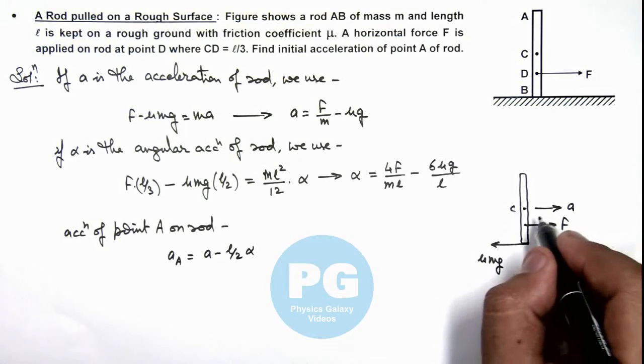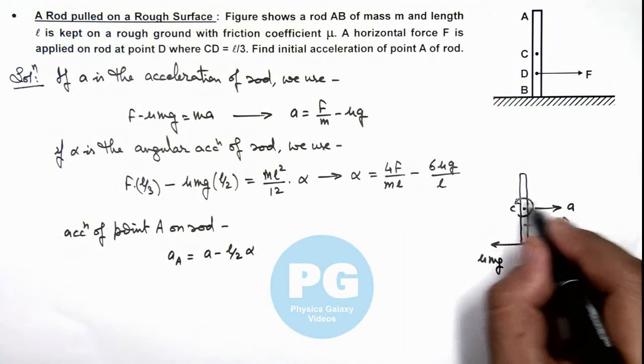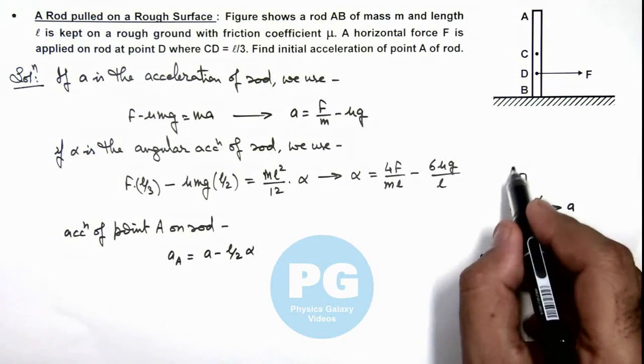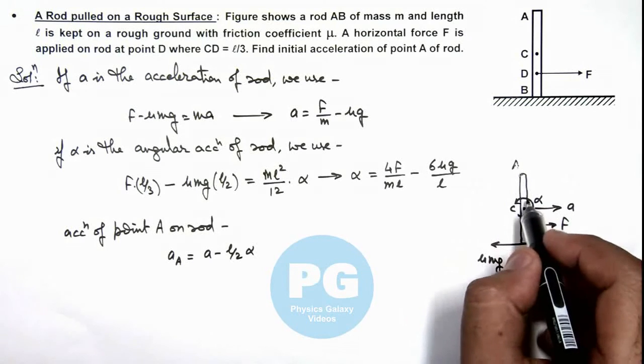And in this situation the angular acceleration of rod is in opposite direction α. So point A we can write moving forward with a and going back with l by 2 α.